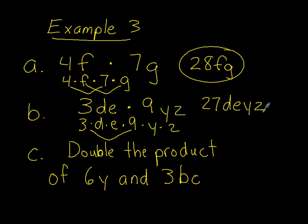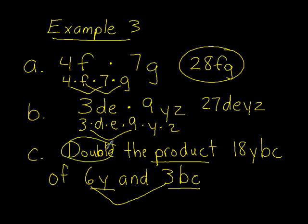And our last one here says double the product of 6Y and 3BC. So the first thing we need to do is find the product of 6Y and 3BC. So they're having us multiply those together. We can do 6 times 3 is 18, and then we have YBC. So now that we've figured out the product of 6Y and 3BC is 18YBC, we now need to double that. And when you double, that means to multiply by 2. So we're going to multiply that whole term by 2, and we end up with 36YBC.